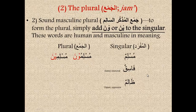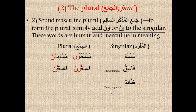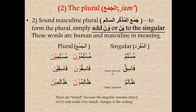Example number two: we have the word fasiq, which means sinful or immoral — someone who is sinful or immoral. To make the plural, we add una or ina: fasiquna, fasiqina, meaning men who are sinful or immoral. Lastly, we have zalim, a male individual who is unjust or a male oppressor. To get the plural, we add una or ina: zalimuna and zalimina. These are sound because the singular remains intact — notice how the word muslim still appears in the plural, and fasiq and zalim appear as well. We are only making very simple changes to the ending, adding una or ina.